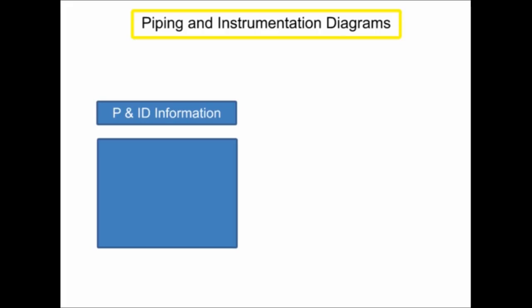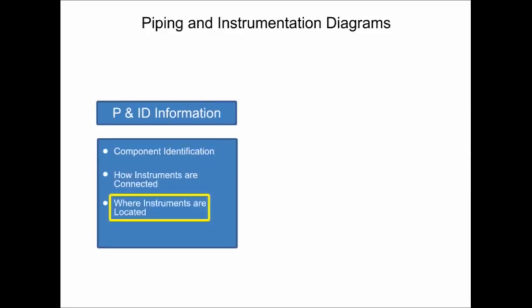Piping and instrumentation diagrams provide information that includes component identification, how instruments are connected, where instruments are located, and their function within a process.